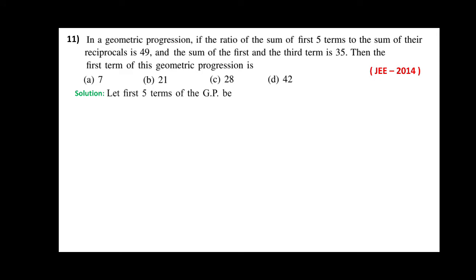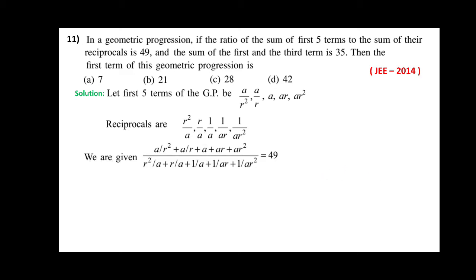For the solution, let the five terms of the geometric progression be A/R², A/R, A, AR, AR². The reciprocals of these terms are R²/A, R/A, 1/A, 1/AR, 1/AR². We have to consider the ratio: (A/R² + A/R + A + AR + AR²) divided by (R²/A + R/A + 1/A + 1/AR + 1/AR²) is equal to 49. After addition and cancellation by taking common terms, A² = 49.